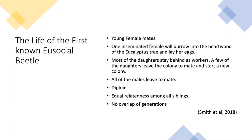Austroplatypus incompertus is diploid. This means that they have 100% relatedness to their siblings. They are, in fact, more closely related to their siblings than they would be to their own offspring. High relatedness is often thought to be necessary for eusociality to evolve in an organism.